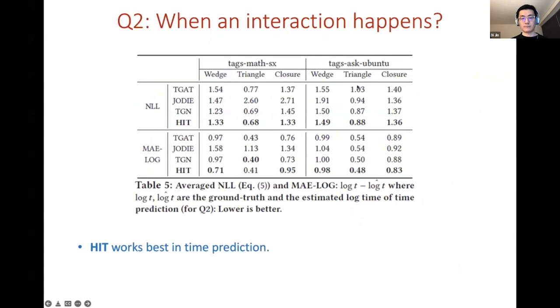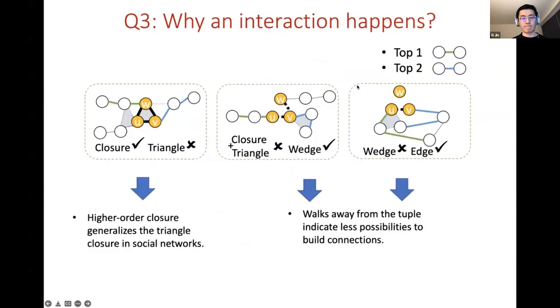Moreover, our model can also achieve the best accuracy to predict when an interaction may happen among three nodes. Due to time limitation I will not go into details here, but I would like to emphasize our results to question three on why a type of interaction may happen, that is the model interpretation part.